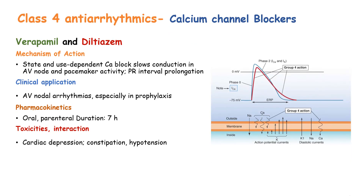Class 4 antiarrhythmic drugs, also known as calcium channel blockers, include verapamil and diltiazem. They work by blocking calcium channels, slowing down conduction in atrioventricular nodes and pacemaking activity, and prolonging the PR interval. Clinically, they are used in atrioventricular nodal arrhythmias, especially as a prophylactic medication. Available in oral and parenteral formulations with a duration of action of around 7 hours. Toxicities include cardiac depression, constipation, and hypotension.